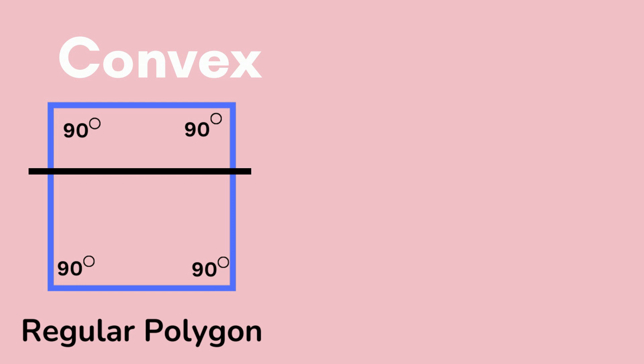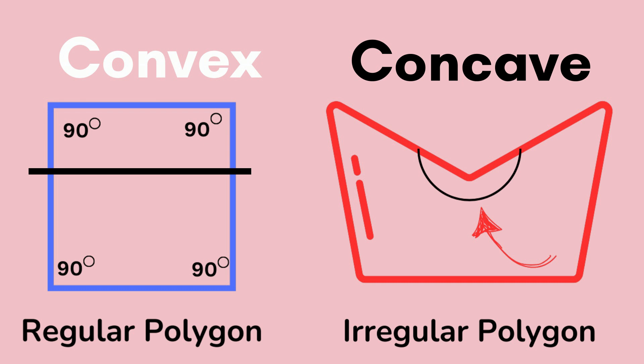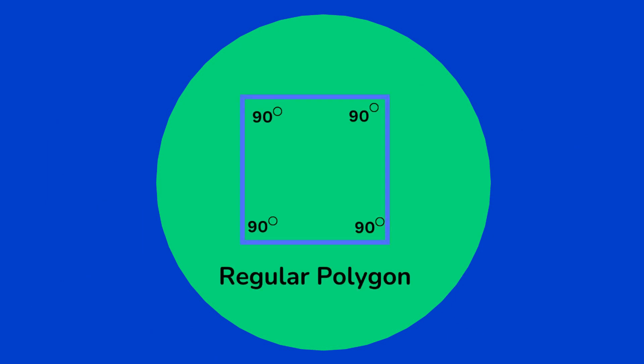If you draw a line through a concave polygon, it will intersect the polygon in more than two places. With a convex polygon, it has the appearance as if all the vertices are pointing outward.